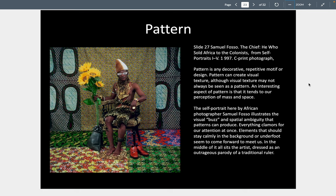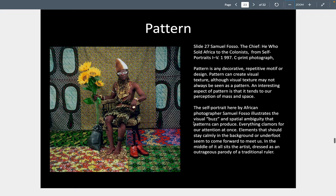Pattern is any decorative or repetitive motif or design. Pattern can create visual texture, although visual texture may not always be seen as a pattern. Patterns often have geometric qualities or some sort of grid we can define. Here, Samuel Faso gives us a visual buzz of spatial ambiguity by giving us so many different patterns that we may start to lose sense of space. Also interesting: we appear to have futuristic glasses, maybe old skins and clothes of the past, and contemporary shoes — as if this picture is in a time frame of past, present, and future all at once.